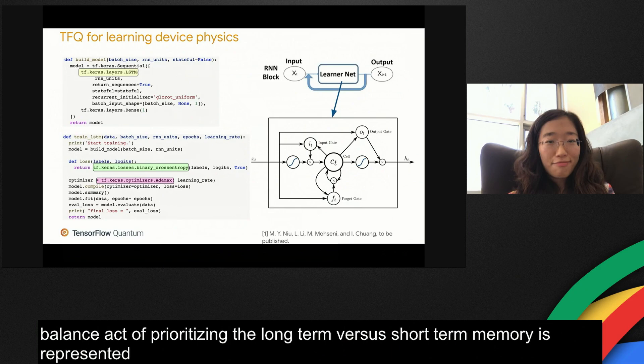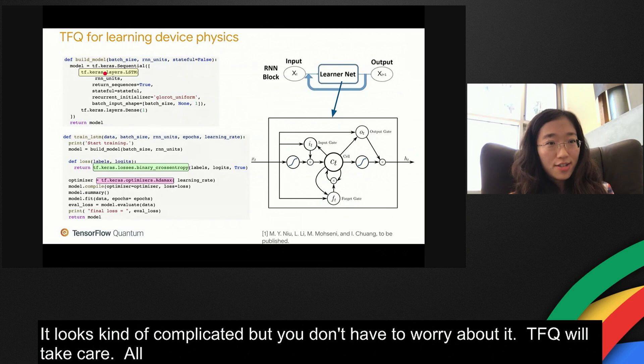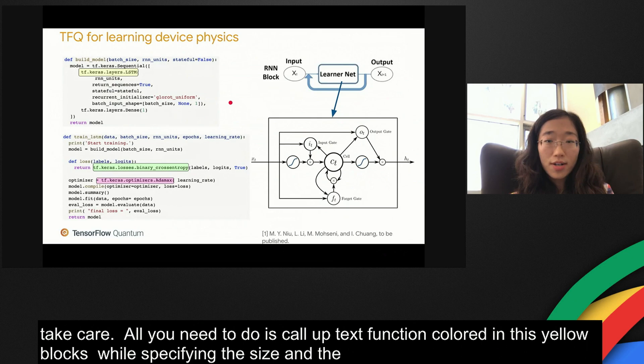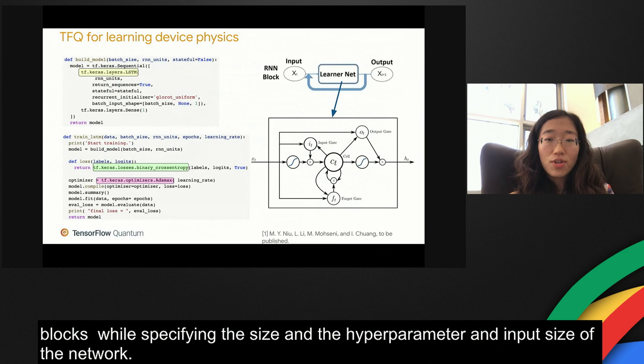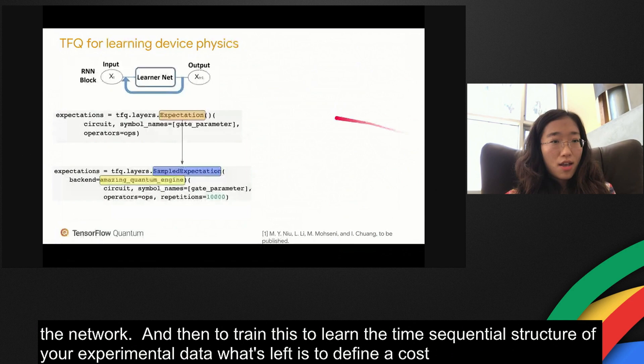It looks kind of complicated, but you don't have to worry about it. TFQ will take care. All you need to do is to call an innate TensorFlow function colored in this yellow box, while specifying the size and the hyperparameters and input size of the recurrent neural network. And then to train this LSTM to learn the time sequential structure of your experimental data, what's left is to define a cost function and to choose your optimizer.